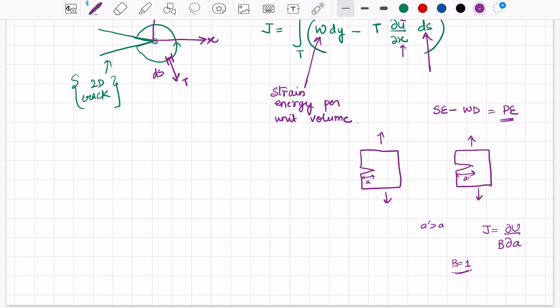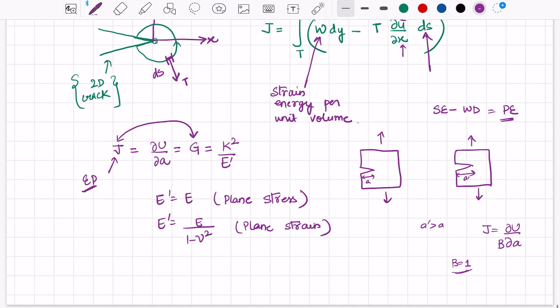We can write J equal to J-integral that is obtained under elastic-plastic conditions. It equals tau U by tau a for a unit thickness specimen, which equals strain energy release rate, and that equals K squared by E-dash. Here, E-dash equals E for plane stress condition, and E-dash equals E divided by 1 minus nu squared for plane strain condition. The value of J-integral is numerically equal to strain energy release rate. J-integral is obtained under elastic-plastic conditions, while G is obtained under elastic conditions.